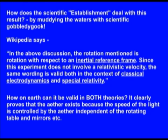How does the scientific establishment deal with this result? By muddying the waters with scientific gobbledygook. Wikipedia says, in the above discussion, the rotation mentioned is a rotation with respect to an inertial reference frame. How on earth can it be valid in both theories? It clearly proves that the ether exists because the speed of the light is controlled by the ether, independent of the rotating table and mirrors.